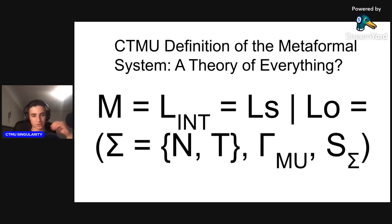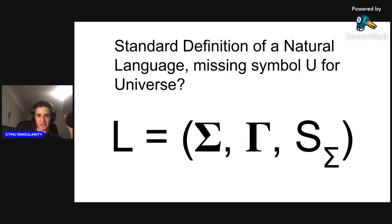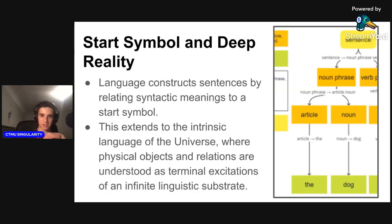L_INT breaks down into two semi-languages: Ls and Lo. Ls is the intension of SCSPL, the internal content of the conspansive manifold—a metamathematical structure that represents the fundamental nature of reality as it evolves. The teleodynamics of this manifold determines how the universe evolves. Lo, its logical complement, is the linear ectomorphic semi-model, the extension of SCSPL—namely its instantiation in the real objective universe studied by physics, consisting of physical objects and relations whose trajectories are locally external to themselves (they're ectomorphic). The last part, M = (Σ = {N, T}, Γ_MU, S_Σ), is very close to how we define a natural language.